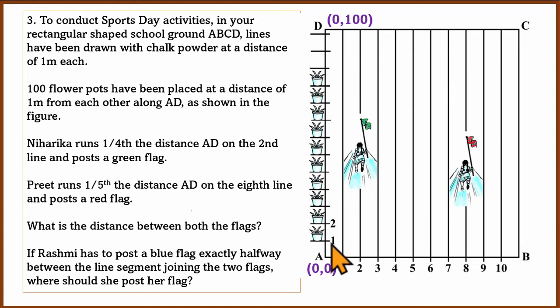In coordinate geometry, point A is (0, 0) and point D is (0, 100) since there are 100 flower pots. Every flower pot coordinate along AD is 0,1 then 0,2 then 0,3 up to 0,100.